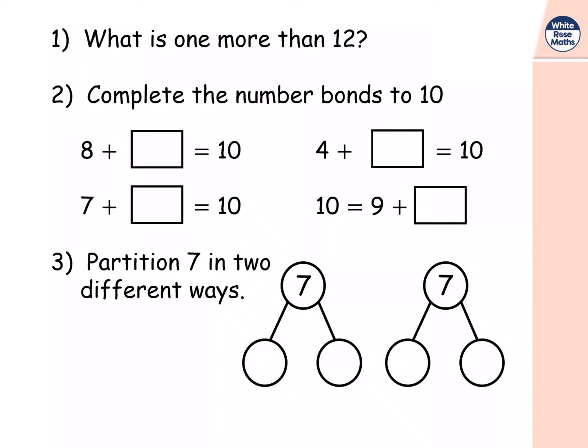How did you get on with those? One more than twelve is thirteen. The number bonds to ten, which will be really important today: eight plus two, four plus six, seven plus three, and then ten is equal to nine plus one.